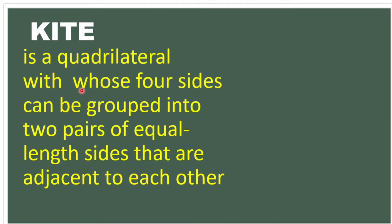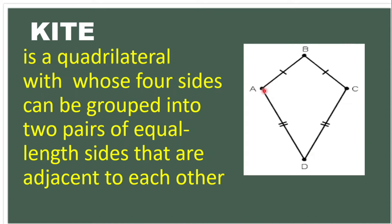We also have the kite. A kite is a quadrilateral whose four sides can be grouped into two pairs of equal-length sides that are adjacent to each other — meaning they are consecutive sides. In this example, side AB is congruent to side BC, and side AD is congruent to side CD. So we have two pairs of equal adjacent sides.